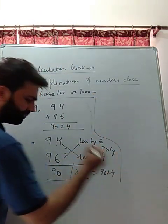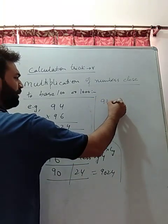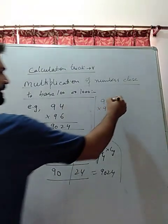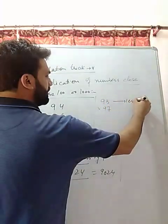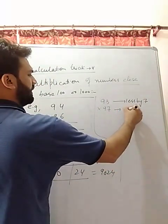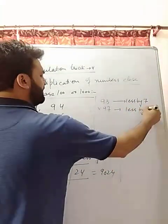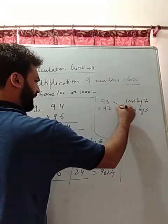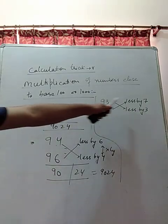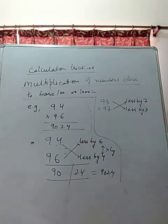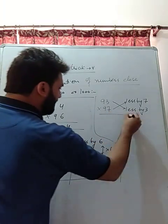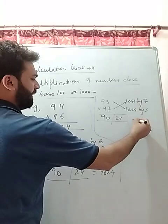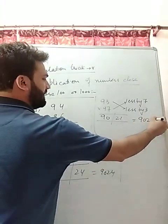Let's do it again. We have to do 93 multiplied with 97. What is the answer? 93 is less by 7, 97 is less by 3. Then cross subtract them. What is 93 minus 3? 90. What is 97 minus 7? 90. So write here 90. What is 7 into 3? 21. So what is the answer? 9021.